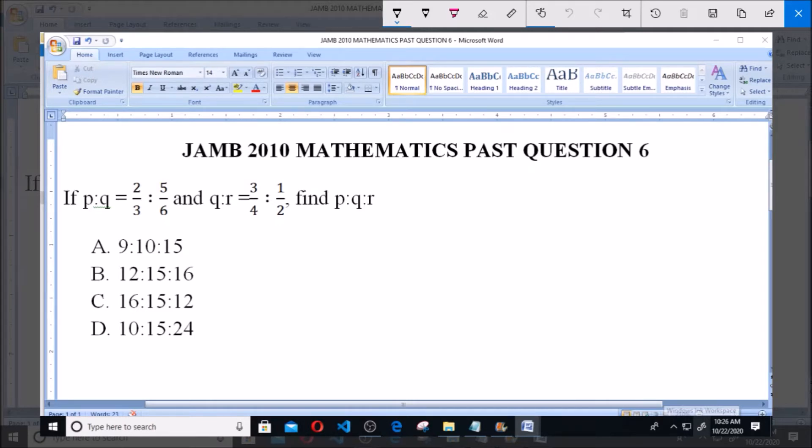The options given are: A is 9:10:15, B is 12:15:16, C is 16:15:12, and D is 10:15:24.